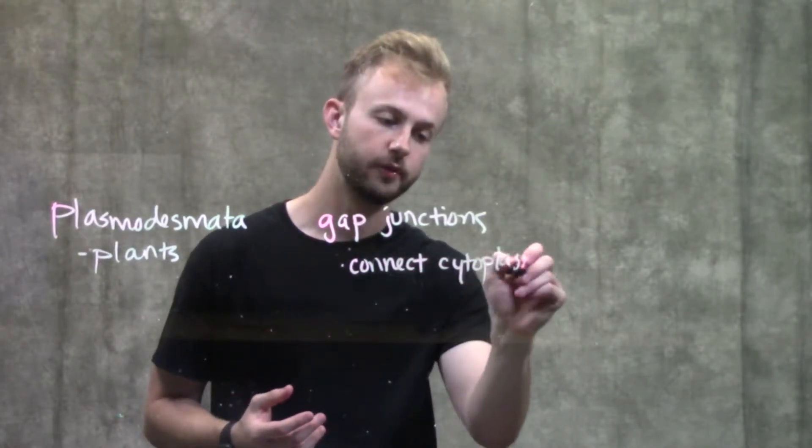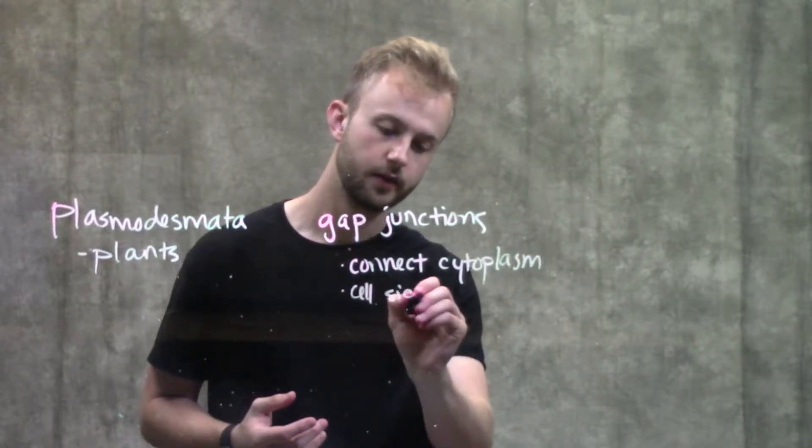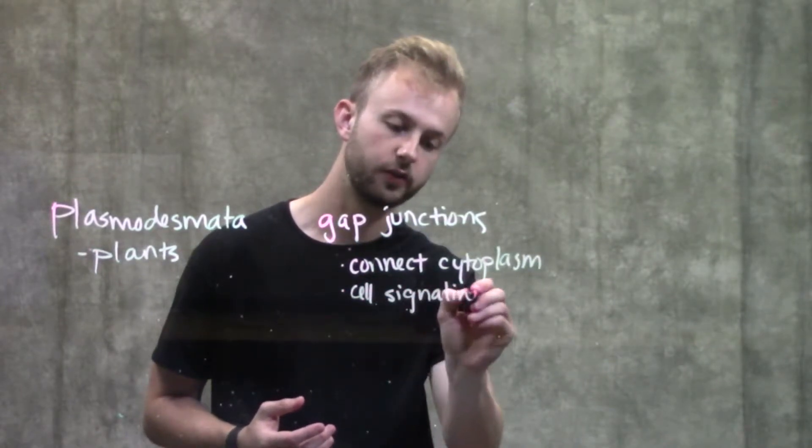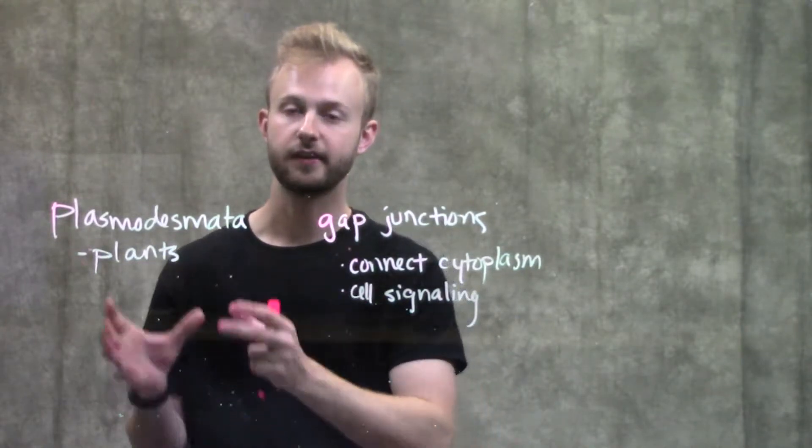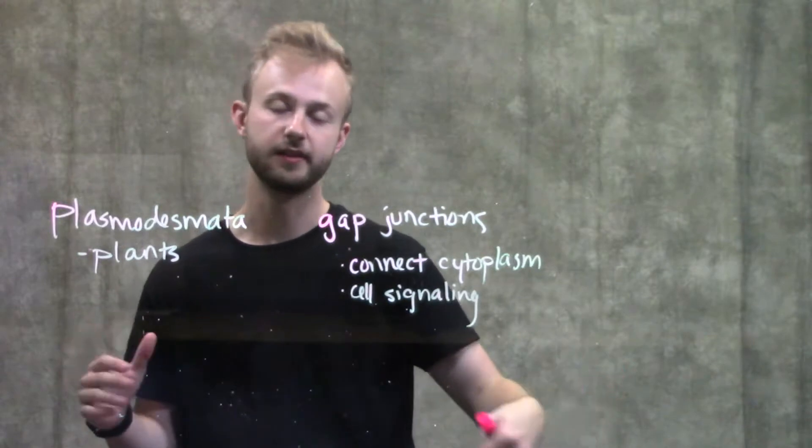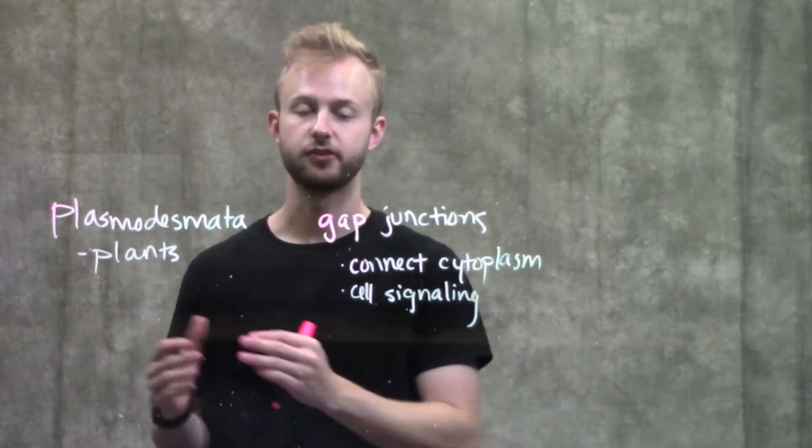They're really important in cell signaling because molecules are able to move through these gap junctions to go from one cell to the next and let the next cell know what just happened in its neighboring cell and send that signal along.